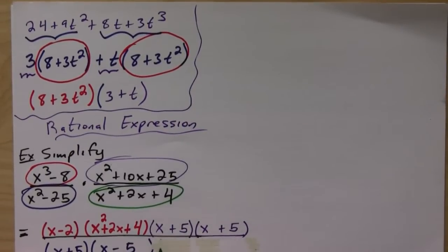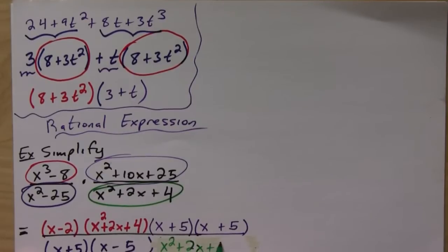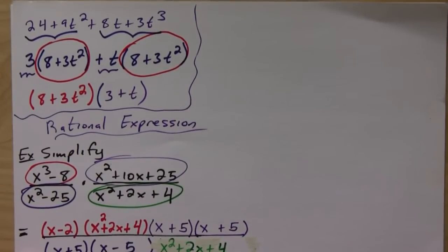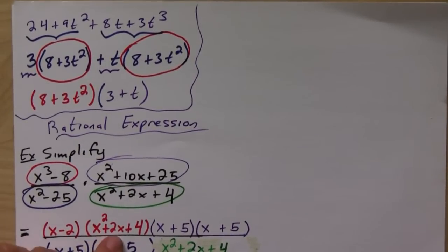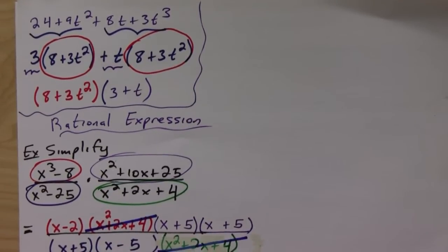But we do notice, take a look around you, x squared plus 2x plus 4 is actually right here. So this guy, although it's not factorable, is going to cancel out with this guy up here.